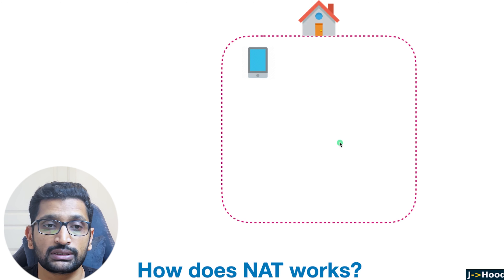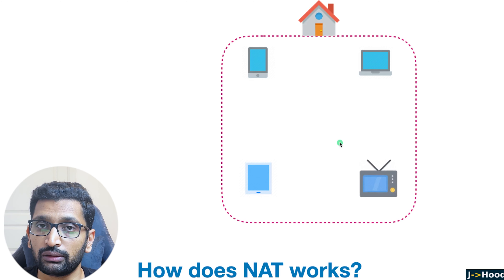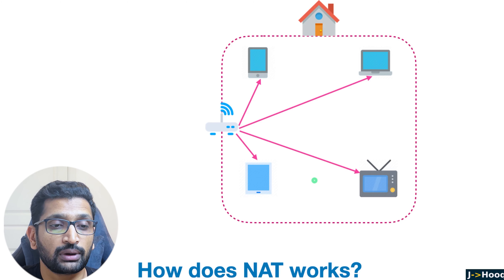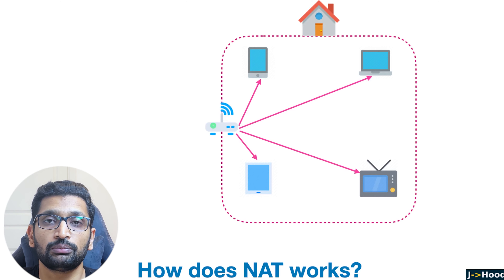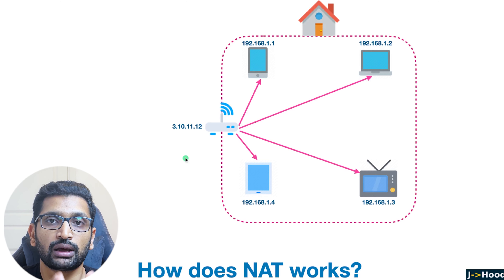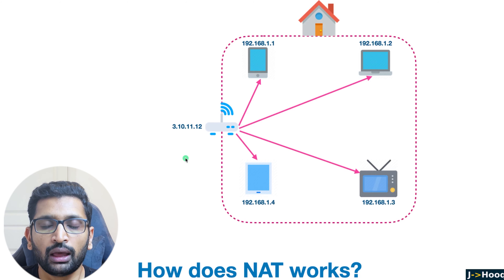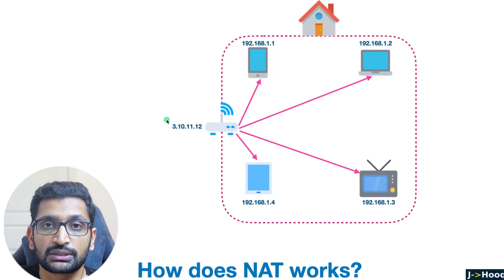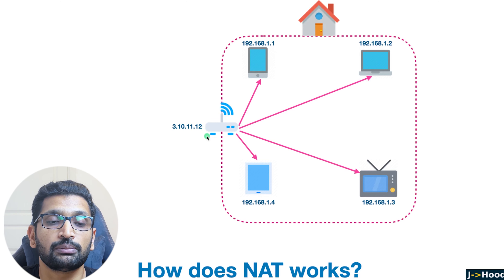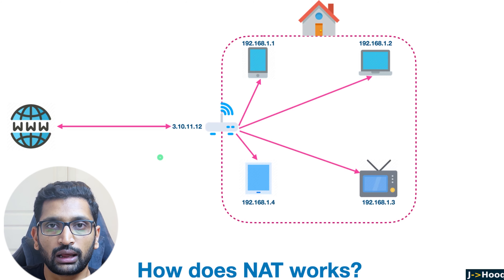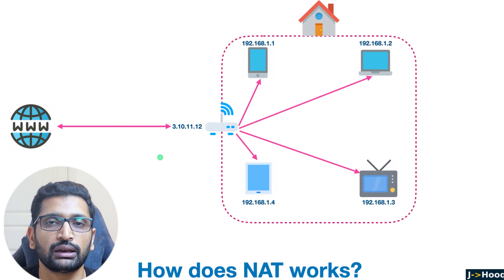In my home network I have devices like my phone, laptop, iPad, and smart TV, all connected to my router which provides internet access. My router has its own public IP address, and along with that, my devices will have their own IP addresses. There is a difference between the router's IP address and the devices' IP addresses — one is a public IP address and the others are private IP addresses.